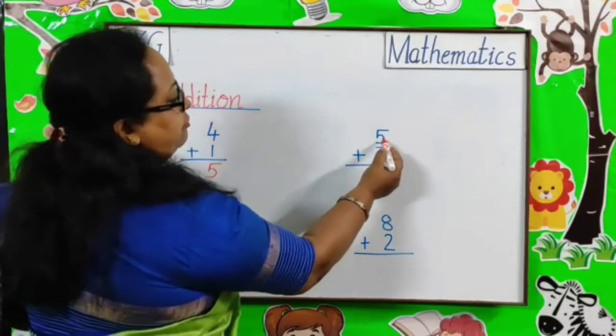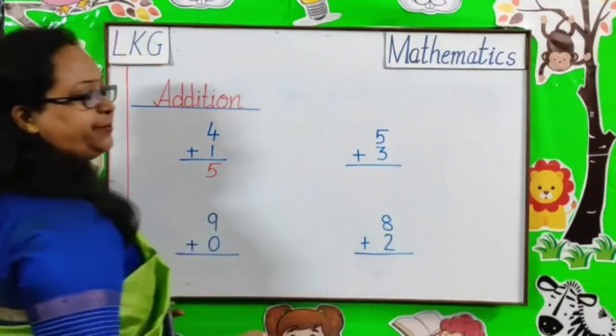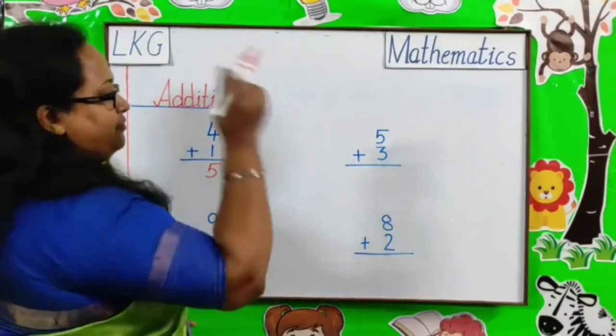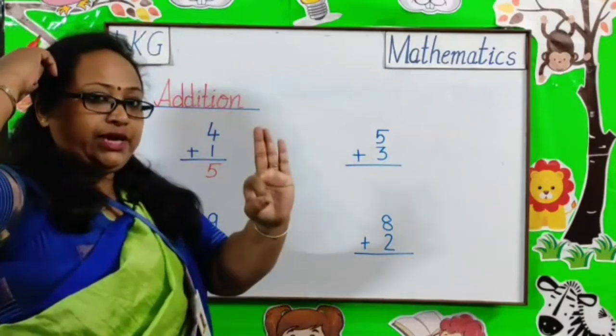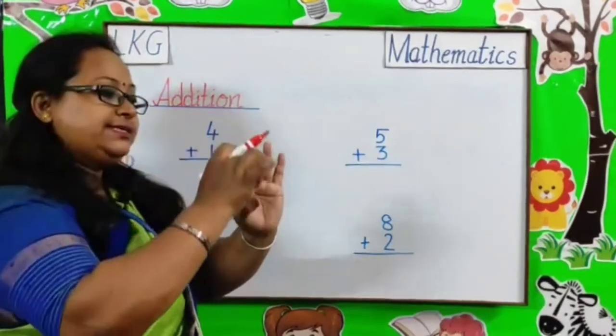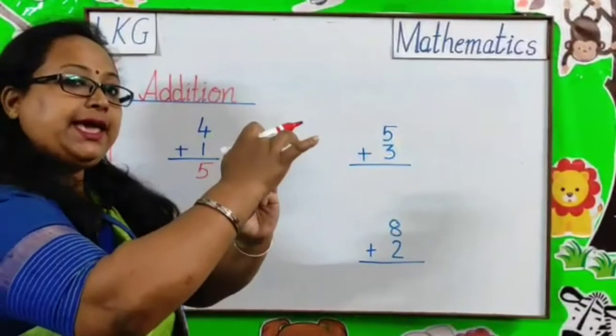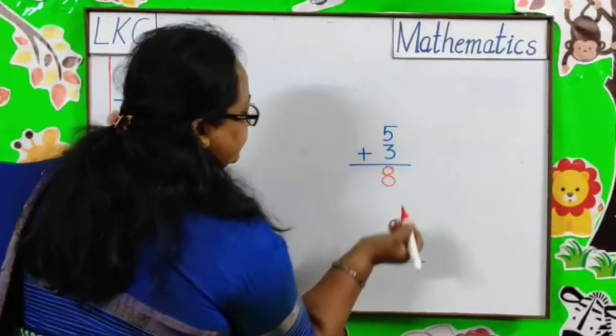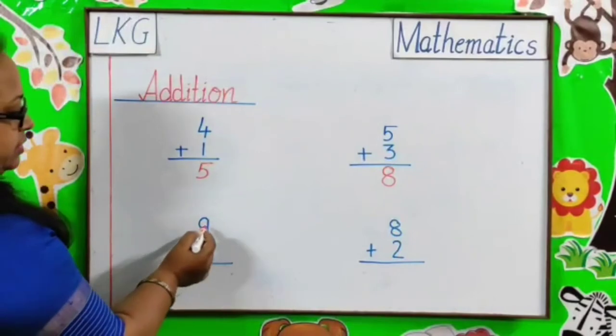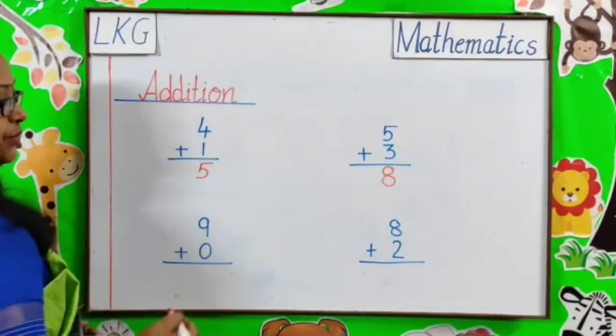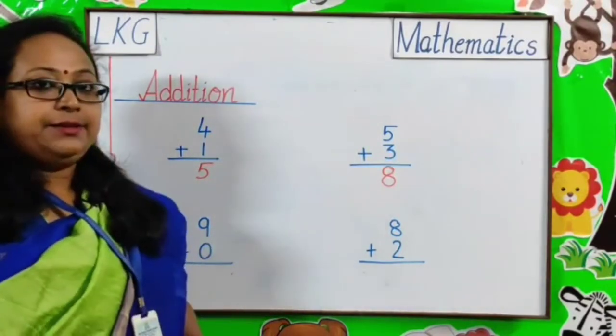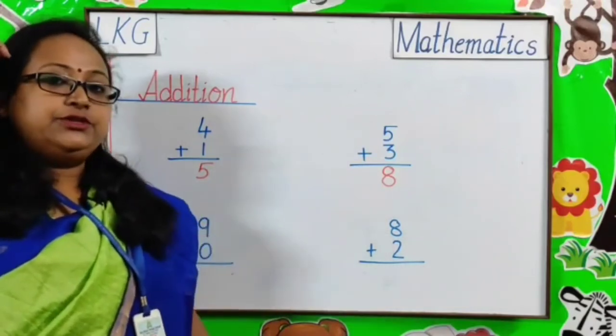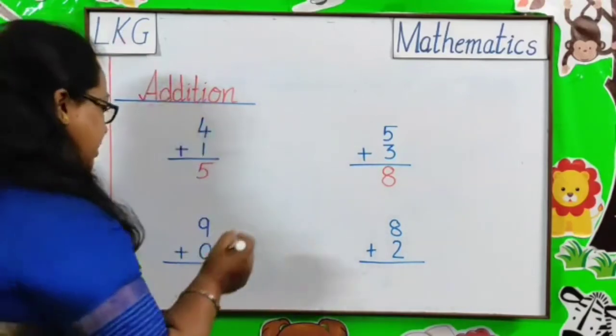The next question. 5 plus 3. 5 and 3. After 5, 6, 7, 8. Answer is 8. Next question. 9 plus 0. 9 plus 0. So, 9 plus 0 is equal to 9.